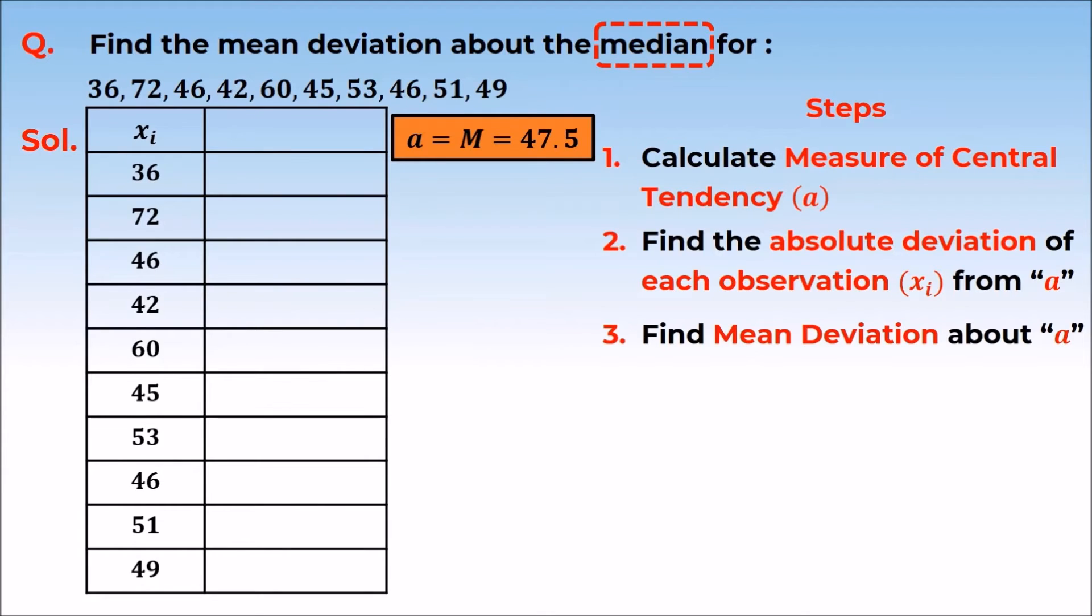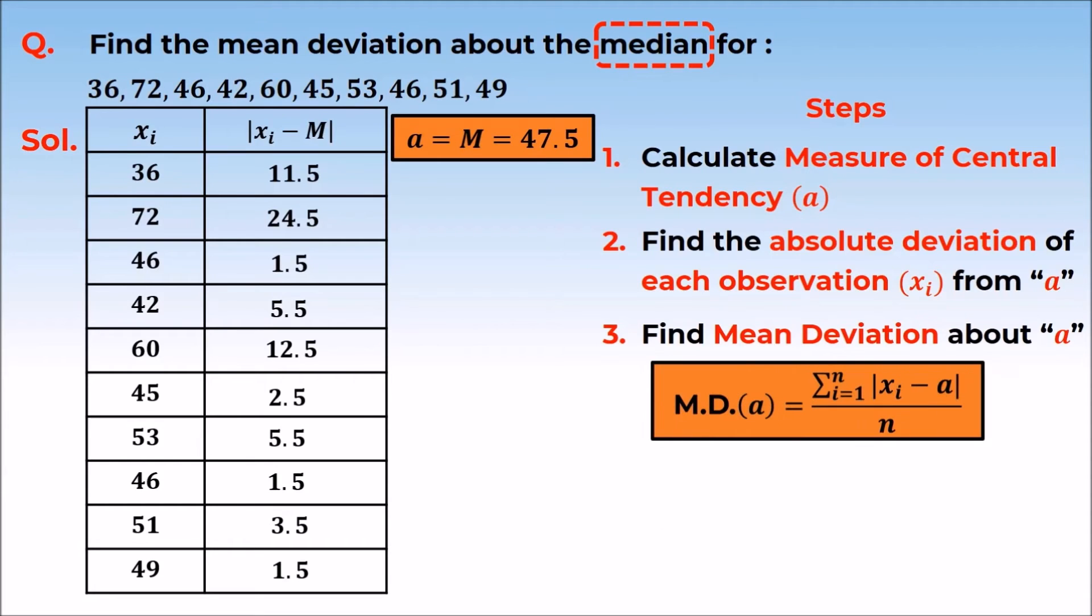We have the median. Now we have to find the absolute deviation from the median. For this, we will use this formula because the measure of central tendency is the median.